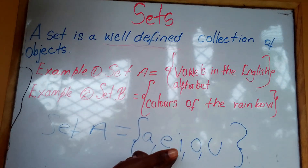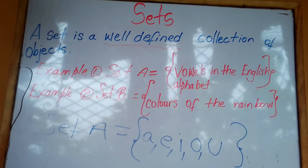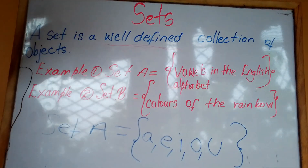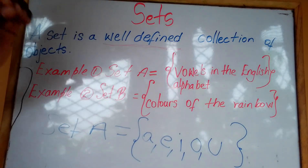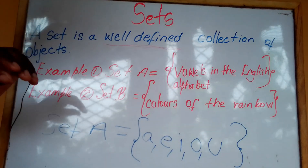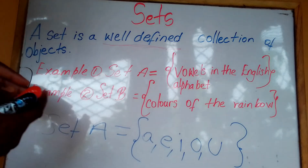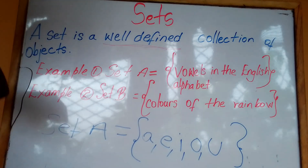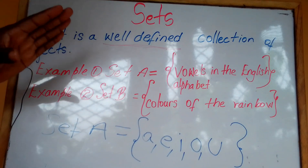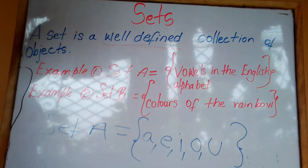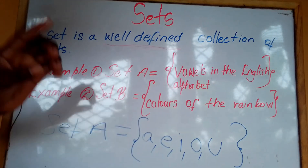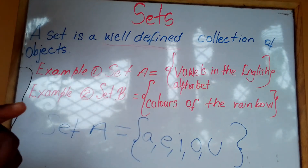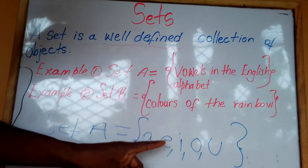So Set A equals {A, E, I, O, U}, and we close the bracket. When they say Set A contains vowels in the English alphabet, they are telling us to list the members of Set A. The members of Set A should be the vowels in the English alphabet, so we have A, E, I, O, U.